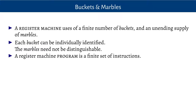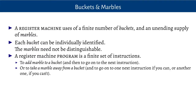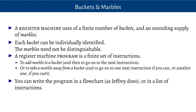A register machine program is a finite set of instructions, and the instructions are very simple. You can add a marble to a bucket and then go on to the next instruction in the list. Or you can take a marble away from a bucket, but now there are two options: either you take a marble away and go on to the next instruction, or if the bucket was already empty, then there might be a different thing that you do in that circumstance. And that's it — those are the only instructions.